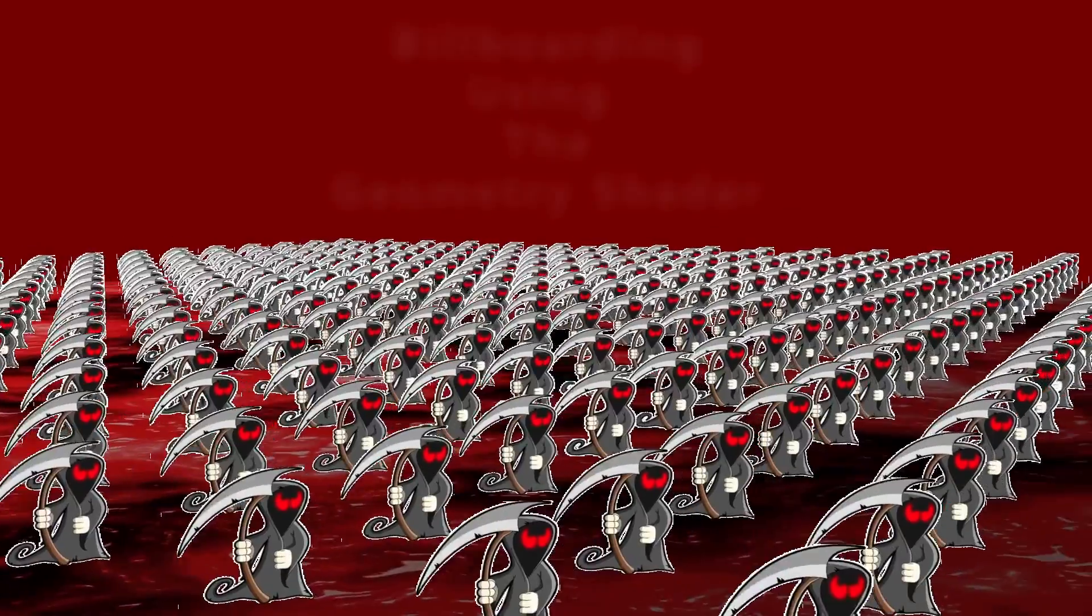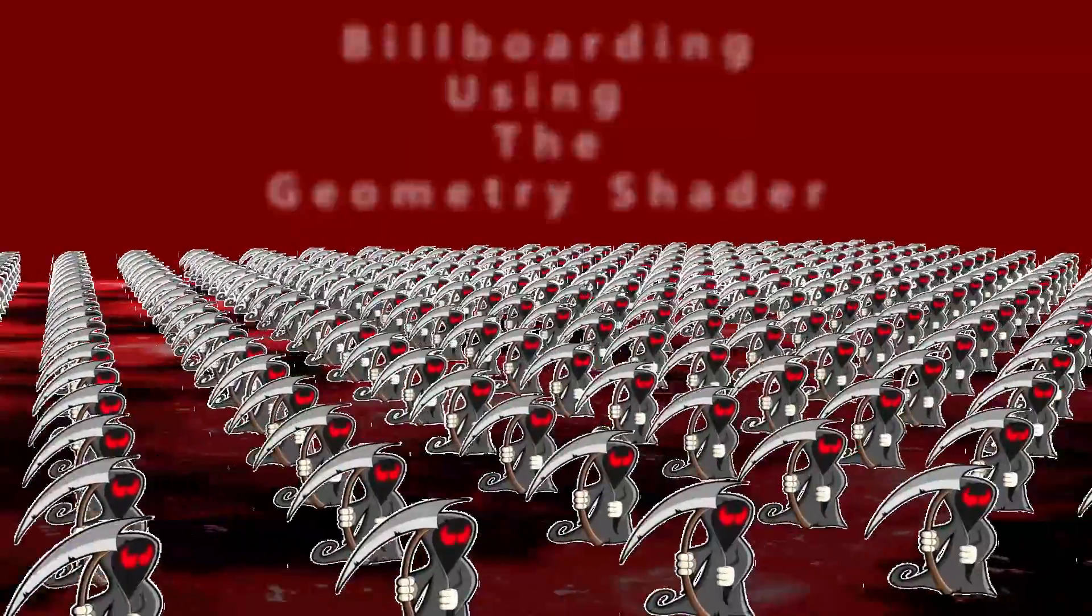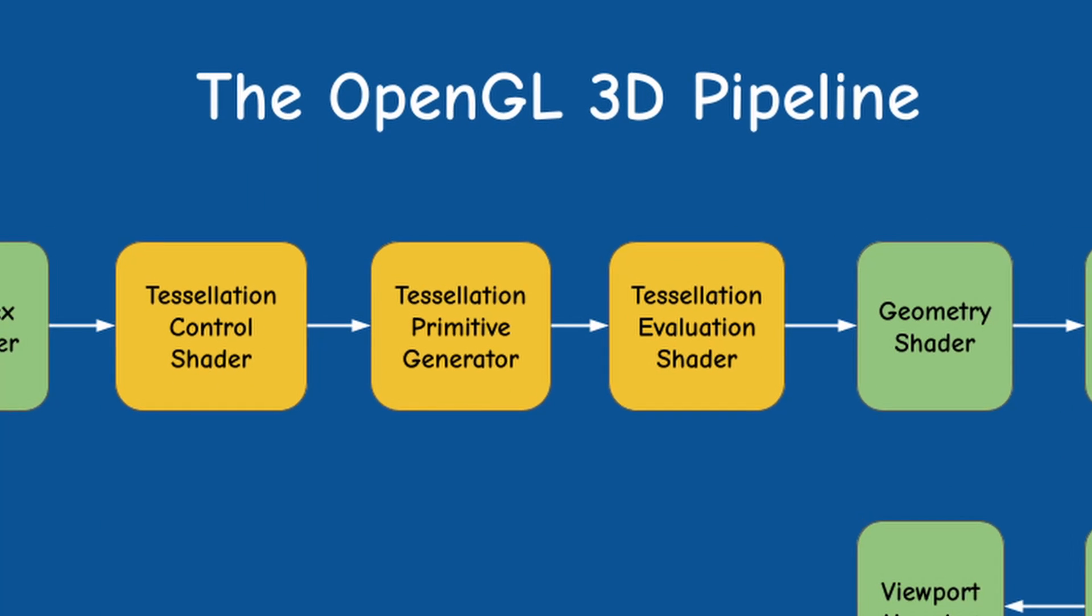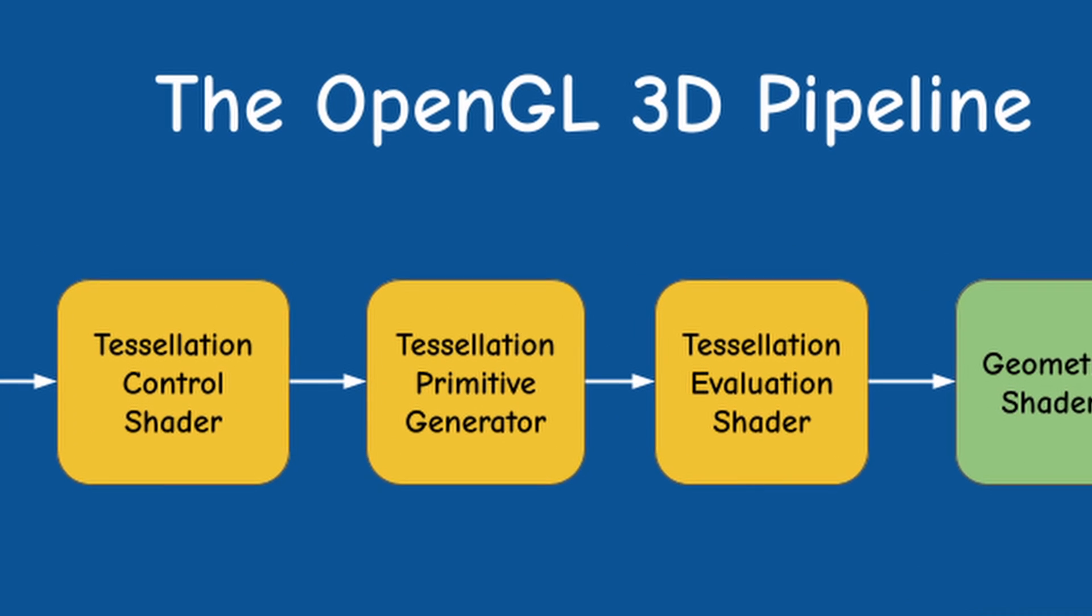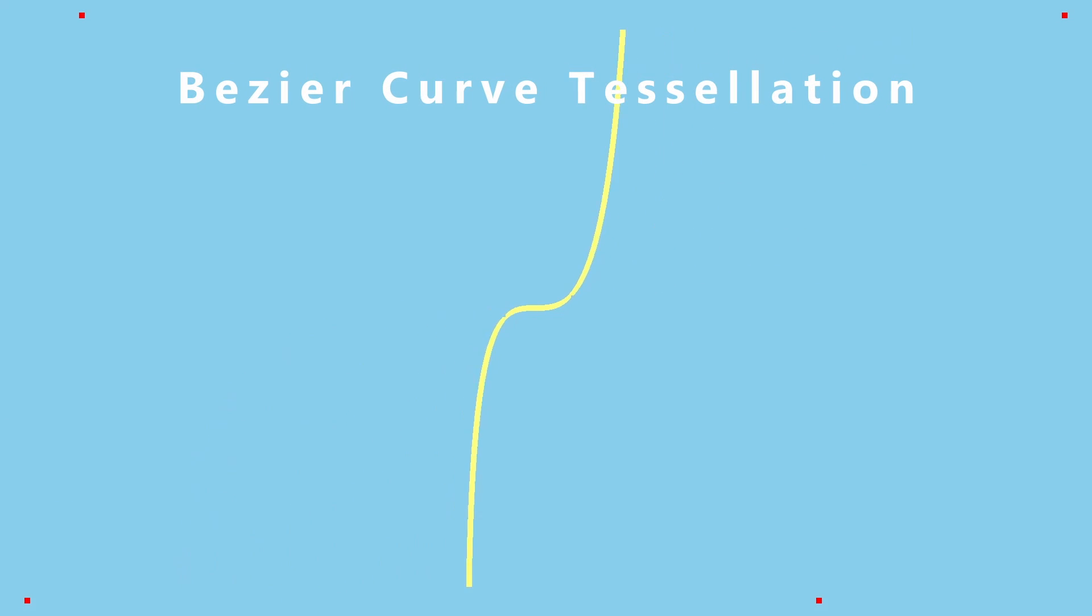In a recent video I demonstrated how the geometry shader can be used to drop vertices or create new primitives. The tessellation stages provide yet another method for generating geometry on the fly and can be used for multiple effects. In this video we will see one such use case, the tessellation of a Bezier curve.